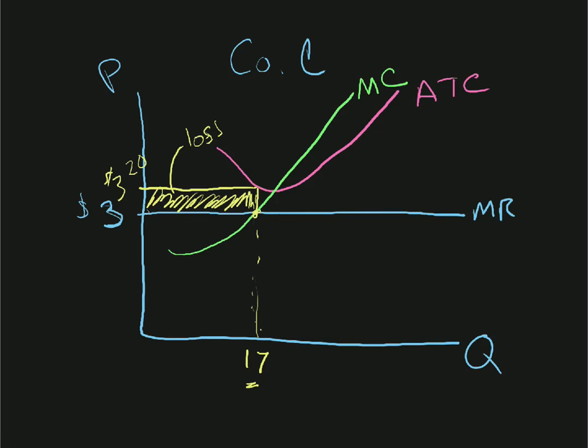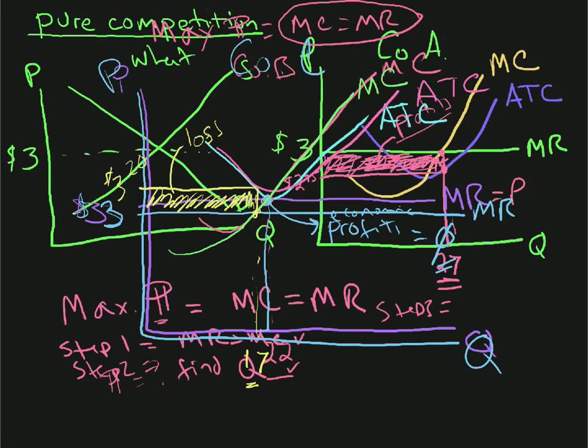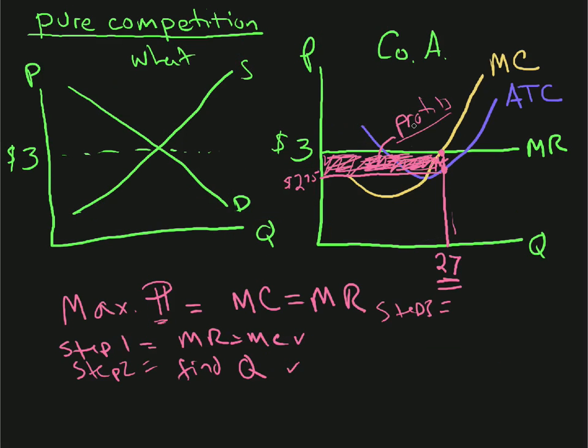If a company's got profits, guess what happens? More companies try to be like this company because more companies want to make profits. See you in pure competition blackboard discussion five, the final one.